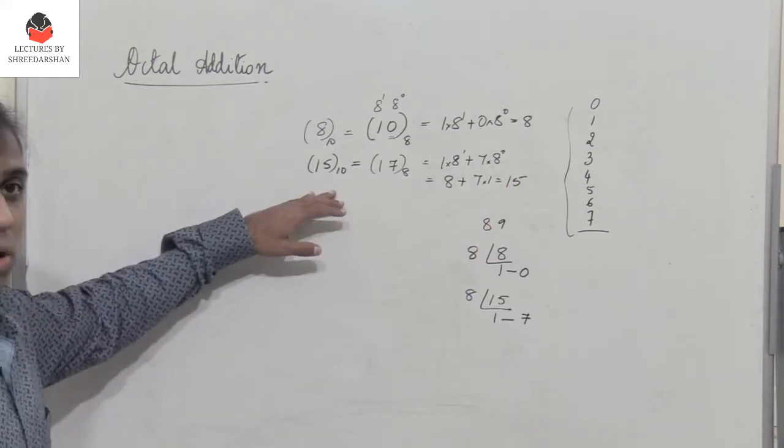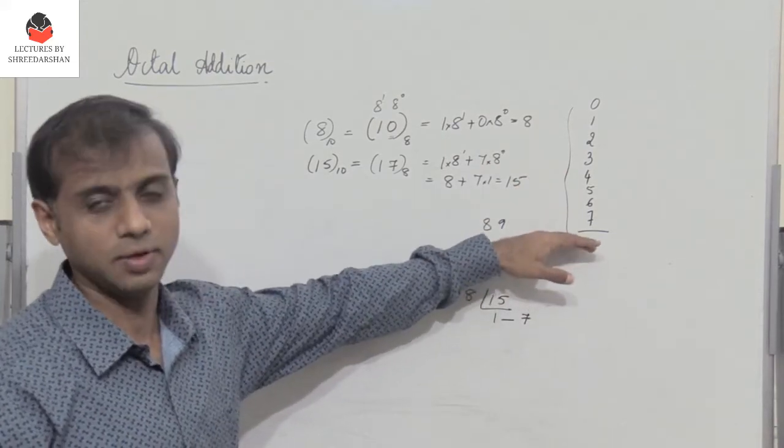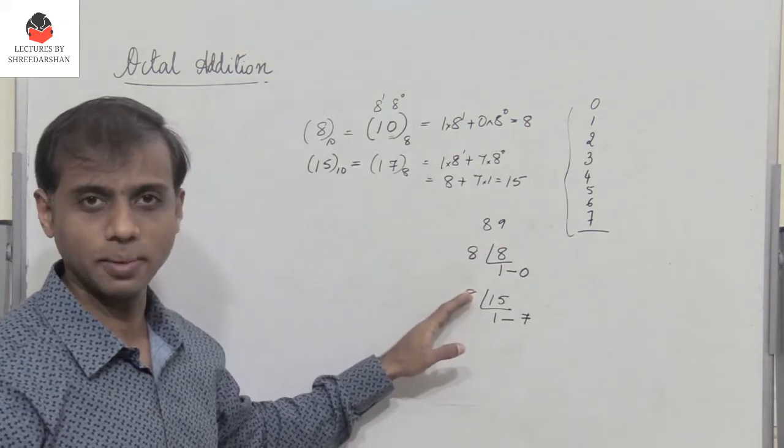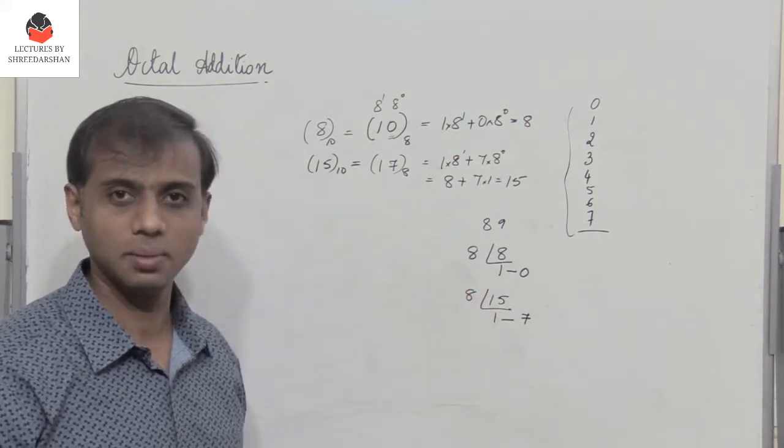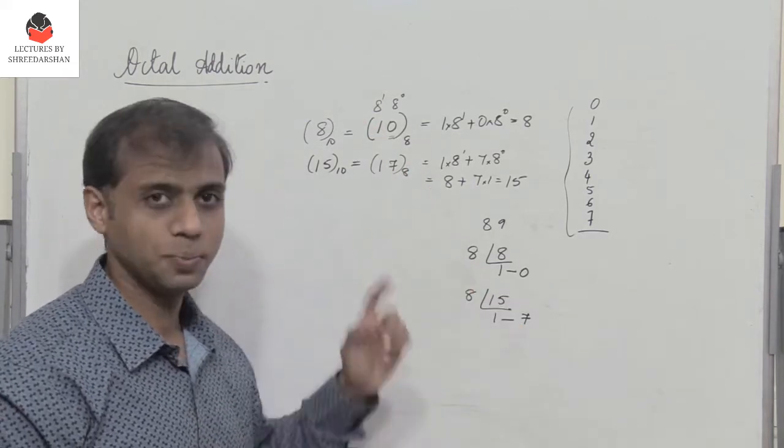This is important because if we add two octal numbers and the number becomes greater than 7, we have to convert it to octal format by dividing by 8. That is the reason why we've gone through this process.